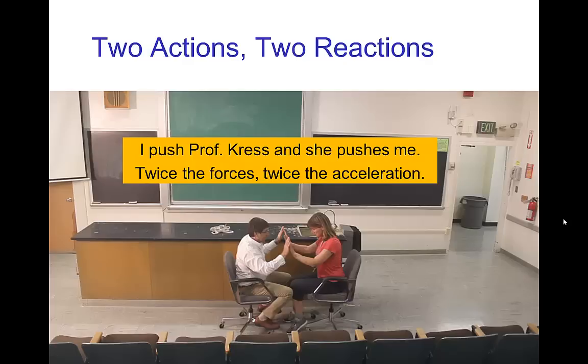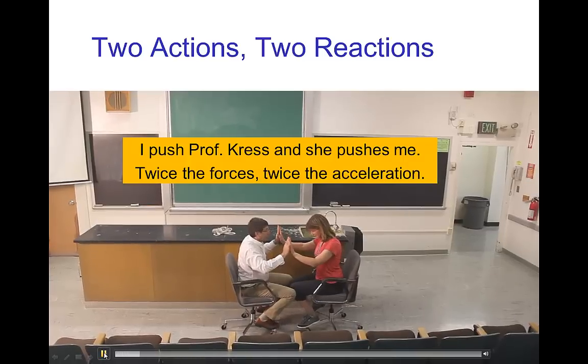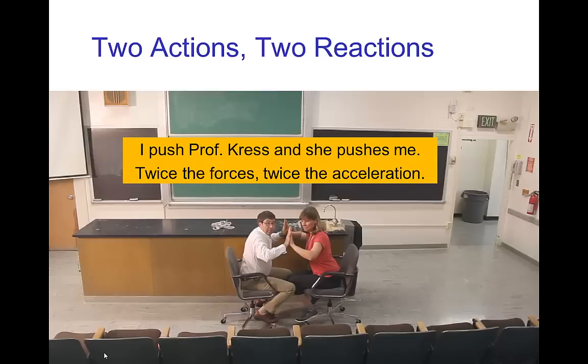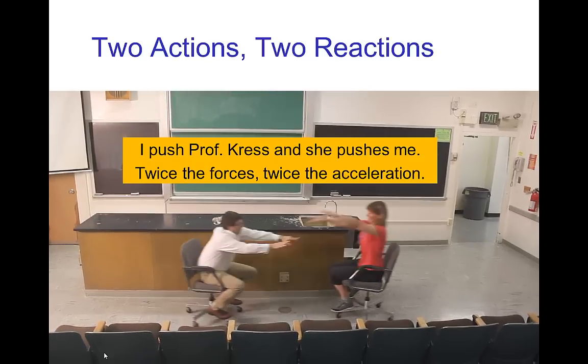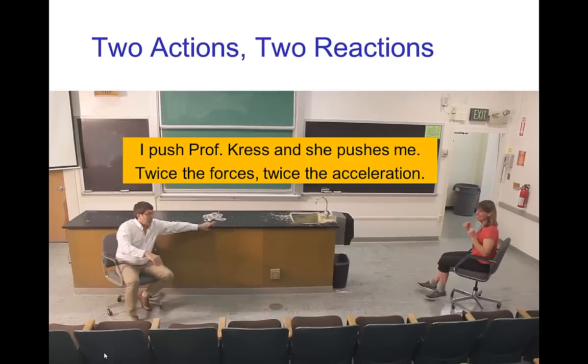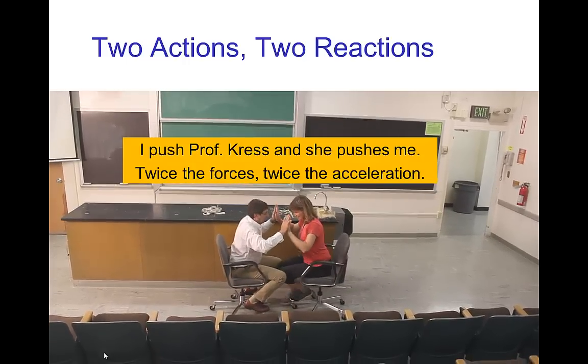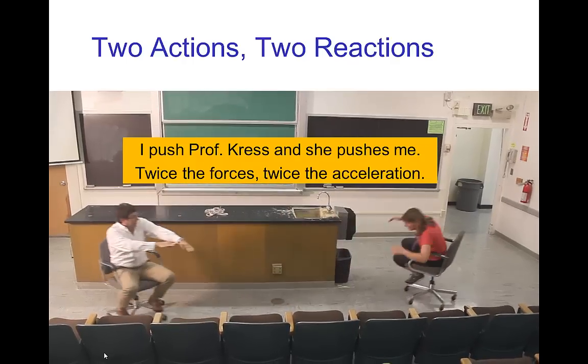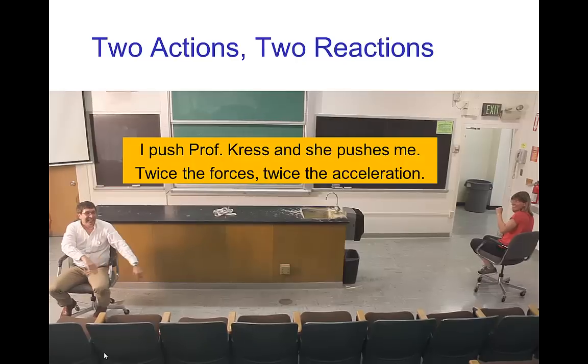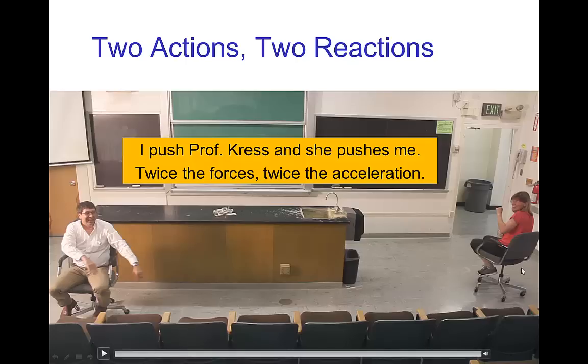All right, let's look at this again in the case where instead of just holding her arm straight, Professor Kress is going to push on me at the same time that I'm pushing on her. Now we're both going to push. Okay. All right. We're going to lean forward a little bit. Now, you notice that we moved much farther. We move much faster, in fact, and the reason now is that instead of just having one action and one reaction, there's two actions. I'm pushing on her, she's pushing on me, and then each of those actions has a reaction, so we have twice the forces, twice the acceleration.